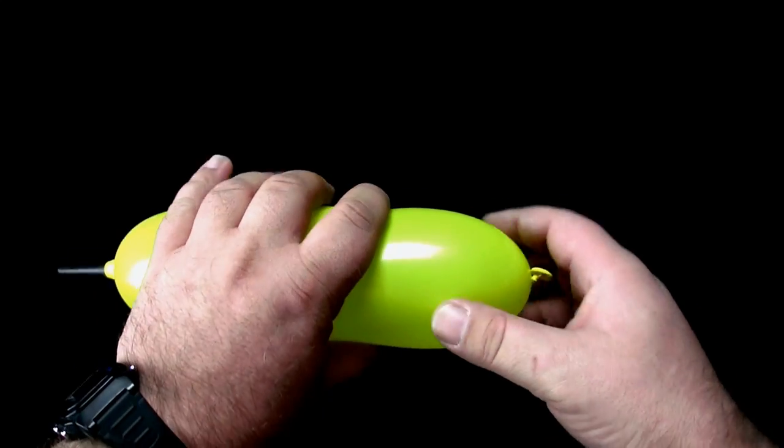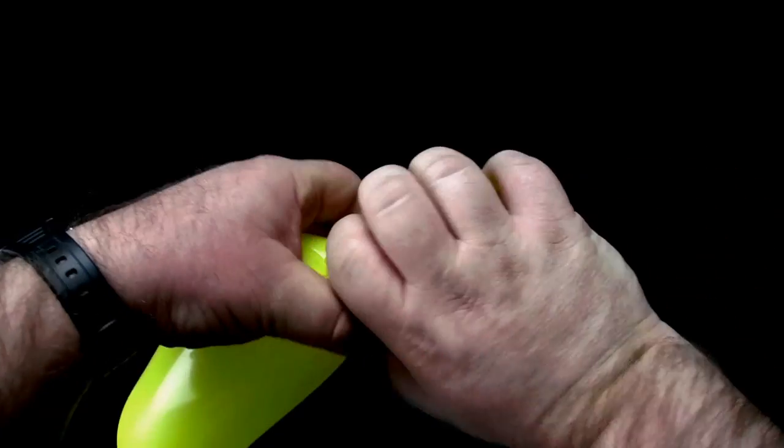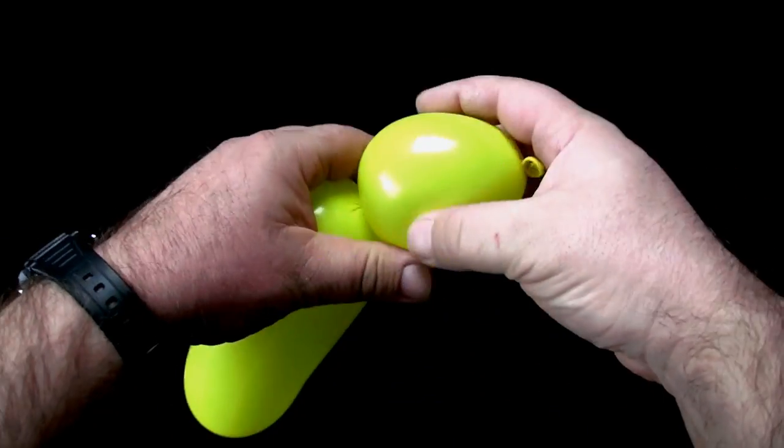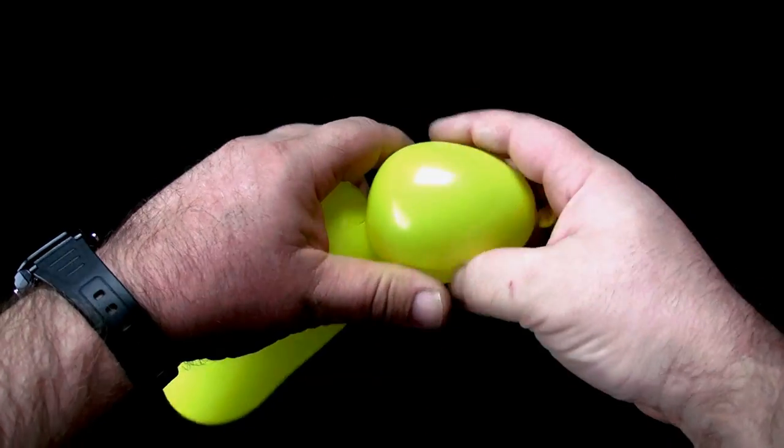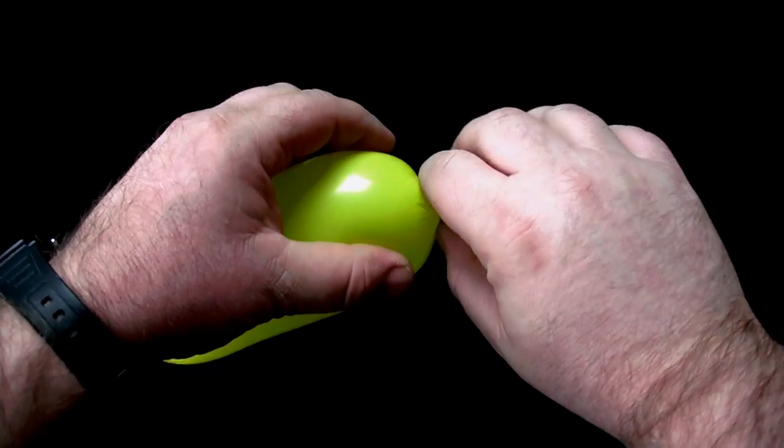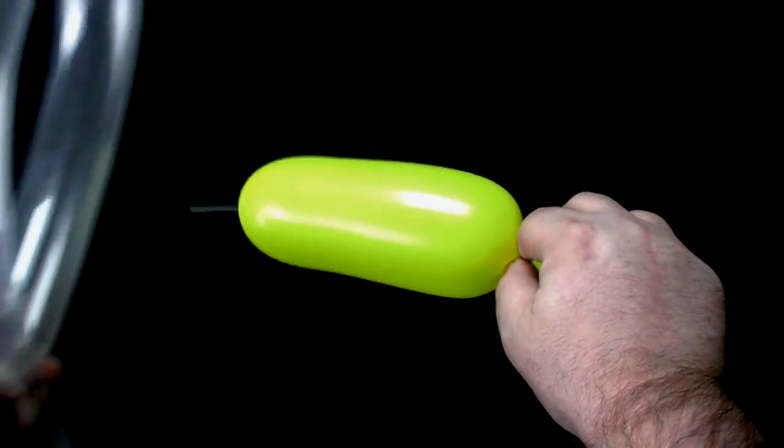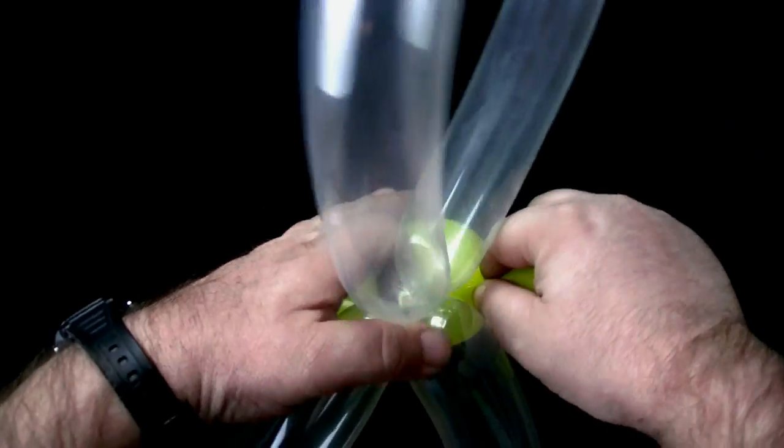Twist a three finger bubble to form the bee's head. Holding the twist so it does not come undone, connect the 260 balloon by twisting it around the twist you made in the 321 balloon.